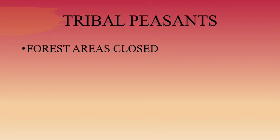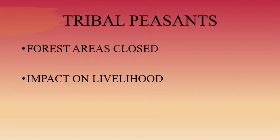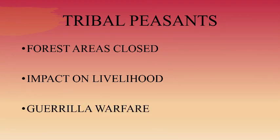The third group was tribal peasants, who interpreted the message of Mahatma Gandhi in another way. The colonial government had closed forest areas, preventing people from grazing their cattle and collecting forest products, affecting their livelihood. When the government forced them to do begar, they revolted. Their leader was Alluri Sitaram Raju, who spoke about the greatness of Gandhi but asserted that India could only be liberated by the use of force. They fought using guerrilla warfare techniques. At the end, Raju was captured and killed.